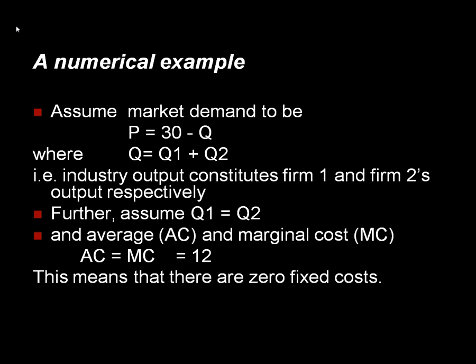The best way of understanding how Cournot operates is to provide a numerical example. In this particular case, we're going to say that the inverse market demand function is P equal to 30 minus Q, where Q is the output and P is the price. We're going to assume that the output in the market is made up of the output of two firms — firm 1 and firm 2, denoted Q1 and Q2 respectively. We're also going to assume that both firms have equal outputs, so the output of firm 1 equals the output of firm 2. Average cost and marginal cost are equal to each other, and they're equal to 12.